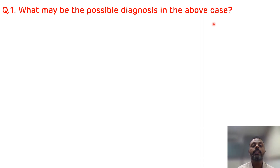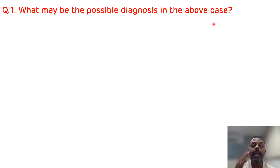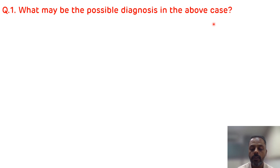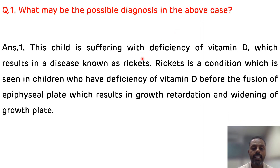The calcium level is reduced, phosphate level is also reduced, and ALP level is elevated — ALP is also known as the bone marker. From all these findings, we can say that the child is suffering from rickets due to deficiency of vitamin D, which results in a disease known as rickets.